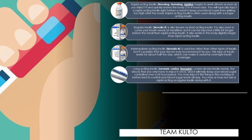Now we're talking about long-acting insulin. When you talk about long-acting insulin, you have your Levemir, Lantus, and Basaglor. This covers all-day insulin needs. The idea is that you only have to inject it once and it will help keep your blood sugar controlled over a 24-hour period. You may inject it first thing in the morning or before bed. You may or may not use a rapid-acting or regular insulin along with it.